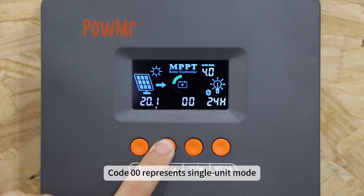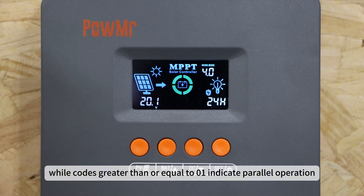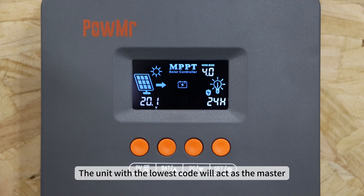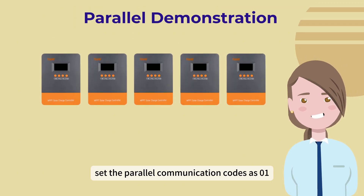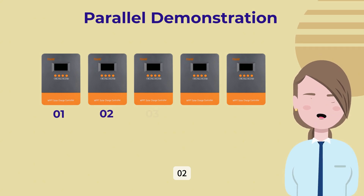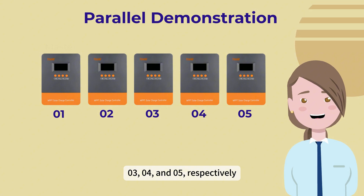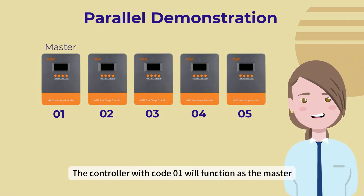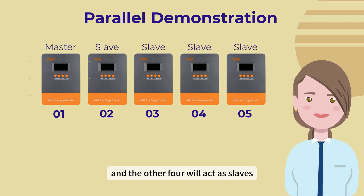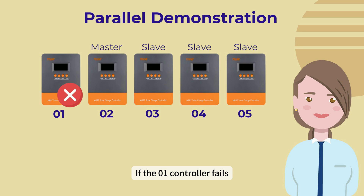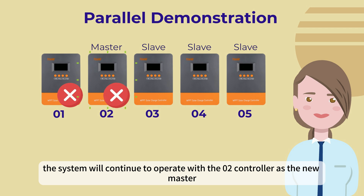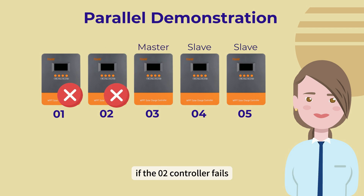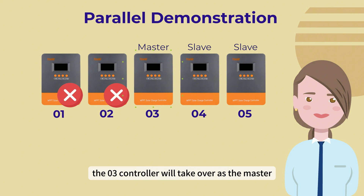Code 0 represents single unit mode, while a code greater than or equal to 0.1 indicates parallel operation. The unit with the lowest code will act as the master. For example, in a system with five controllers, set parallel communication codes as 0.1, 0.2, 0.3, 0.4, and 0.5 respectively. The controller with code 0.1 will function as the master, and the other four will act as slaves. If the 0.1 controller fails, the system will continue to operate with the 0.2 controller as the new master. Similarly, if the 0.2 controller fails, the 0.3 controller will take over as the master.